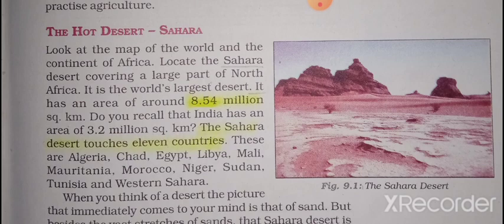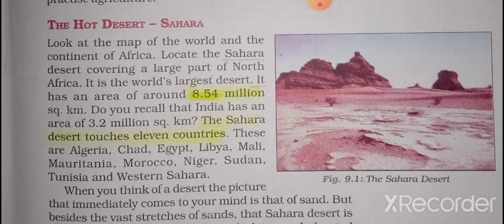The Sahara desert touches 11 countries in total. These are Algeria, Chad, Egypt, Libya, Mali, Mauritania, Morocco, Niger, Sudan, Tunisia, and Western Sahara. You have to remember and memorize these 11 countries.